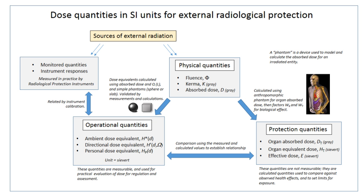The human body cannot sense ionizing radiation except in very high doses, but the effects of ionization can be used to characterize the radiation. Parameters of interest include disintegration rate, particle flux, particle type, beam energy, kerma, dose rate, and radiation dose. The monitoring and calculation of doses to safeguard human health is called dosimetry and is undertaken within the science of health physics.